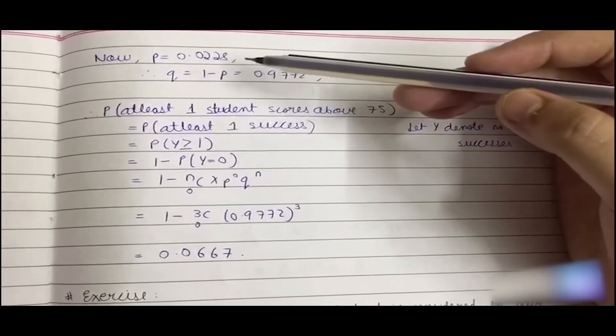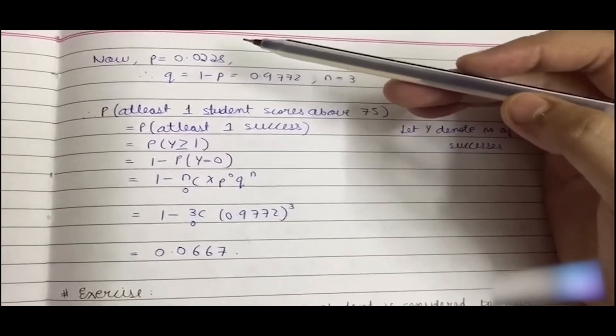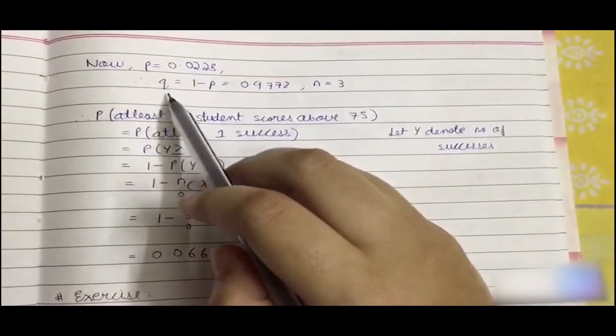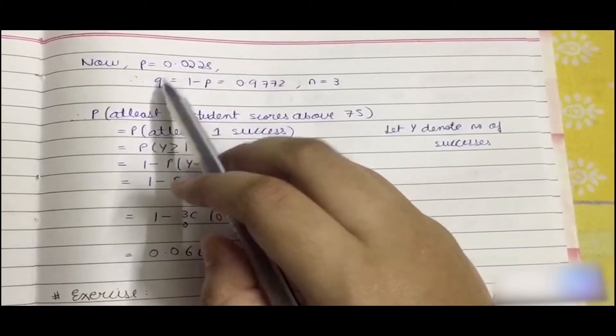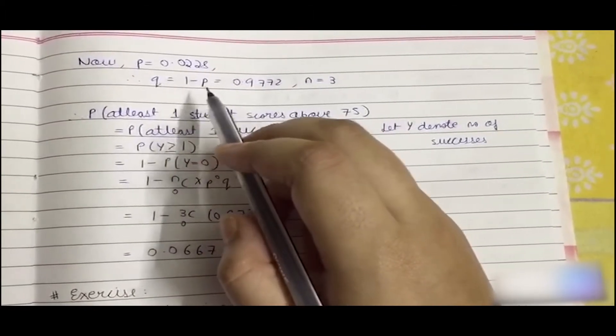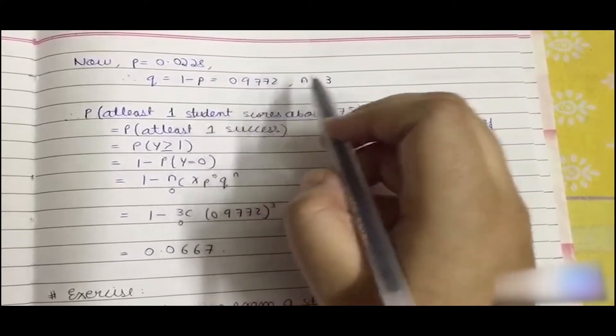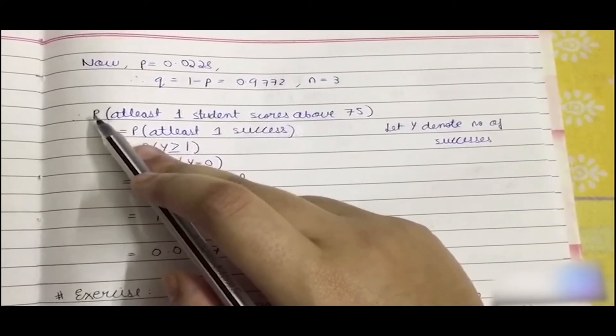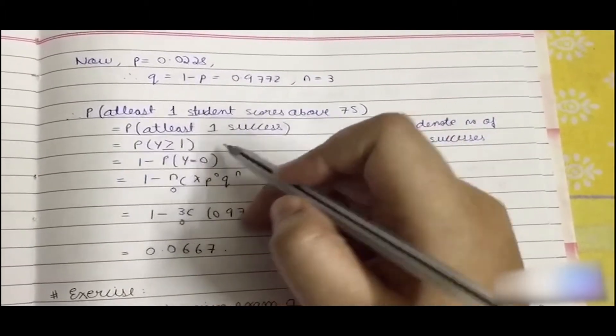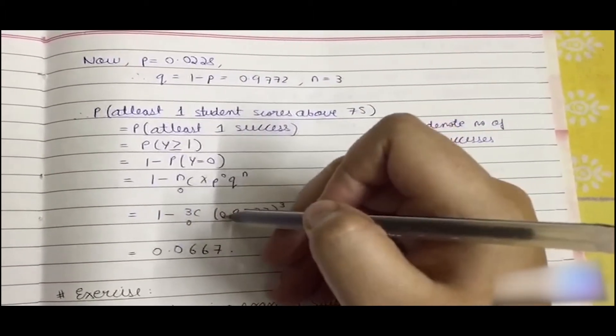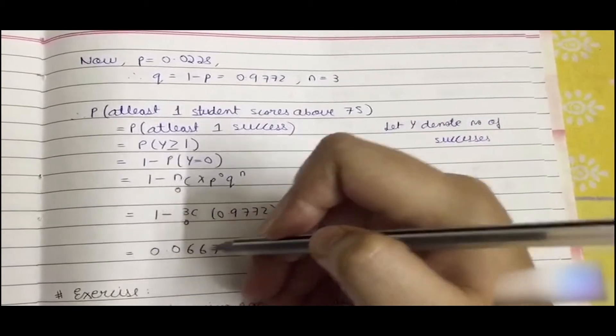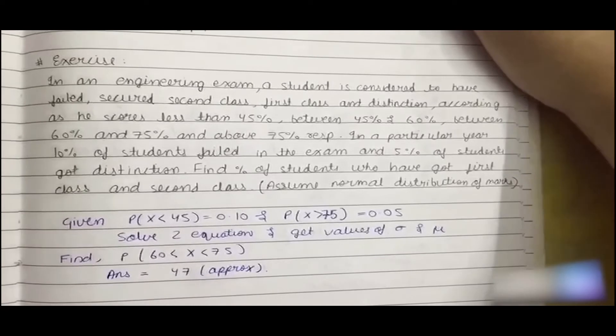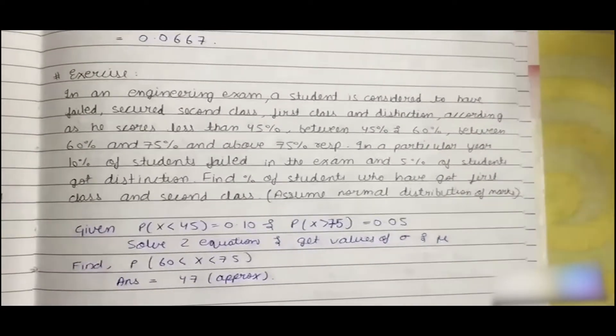Now p equals, we got the success value that was a probability of greater than 75 as 0.0228, and we follow a binomial distribution in this. We get the value of q which is 1 minus p, and n equals 3. Now we follow the binomial distribution, and applying the formula we get the answer as 0.0667. As an exercise you can solve these questions.